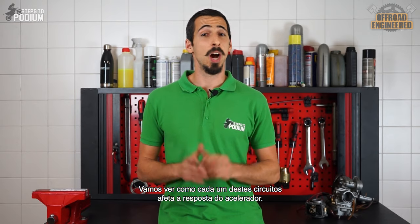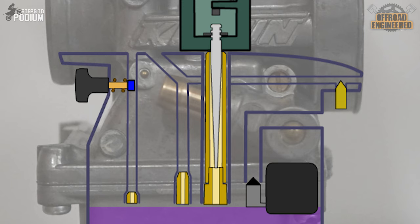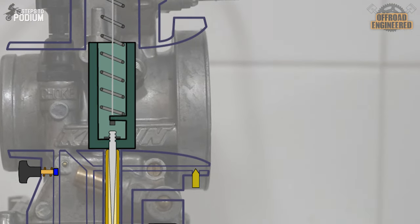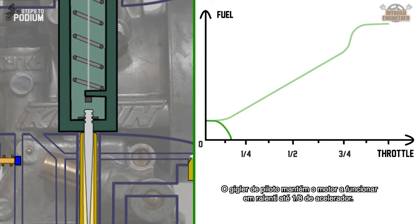Now let's understand how each of these circuits affect the throttle response. There are three tunable jetting systems on a carb: the idle jet, the needle and needle jet, and the main jet. From a fully closed throttle position, the idle jet is what keeps the engine running up to around 1/8th of throttle.